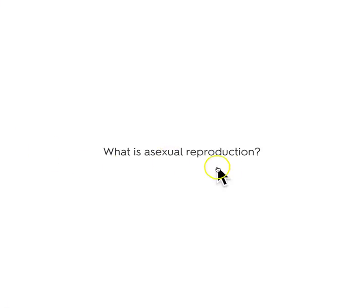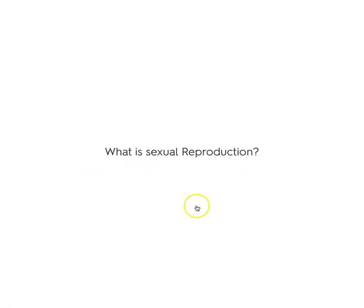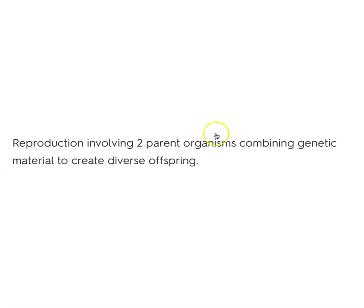What is asexual reproduction? Asexual reproduction is the production of genetically identical offspring from one parent. What is sexual reproduction? It involves two parents to make an offspring that is genetically unique and diverse — genetically different. Two parents: sexual reproduction.